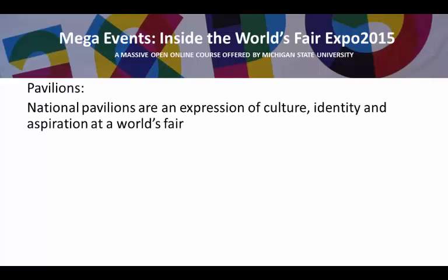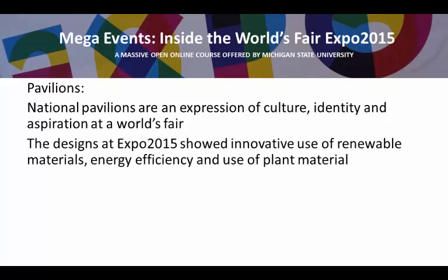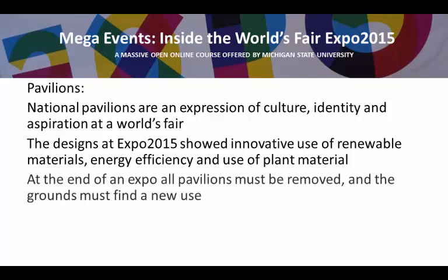When we see national pavilions at a World's Fair, we see them as expressions of culture and identity and also aspirations, showing what the future of a country holds in store. The designs at Expo 2015 were noticeable through their innovative use of renewable materials, energy efficiency, and the use of plant material for both insulation and as a demonstration of future agriculture possibilities. At the end of an expo, all the pavilions must be removed and the grounds must find a new use, so in the next module we will look at legacy — what is left after a fair ends and how to make good use of the fairgrounds and infrastructure.